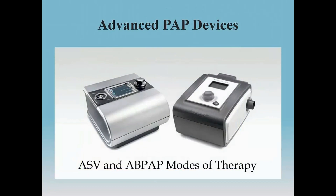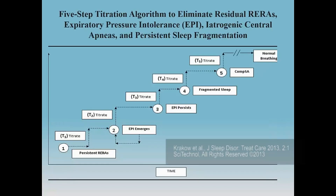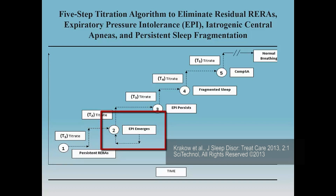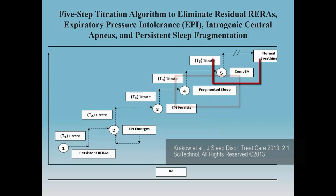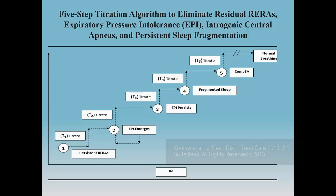Our experience has been that the use of advanced PAP devices, such as ASV and auto-bi-level, are very good at resolving these issues. In this particular algorithm, what you see is a progression specific to the use of the ASV device, where there would be persistent RERAs. When treated with a traditional PAP mode, expiratory pressure intolerance emerges. Expiratory pressure intolerance may actually persist and aggravate sleep fragmentation. Eventually, central apneas and complex sleep apnea may develop, and then you must institute a different form of PAP therapy, such as ABPAP or ASV, to overcome that.